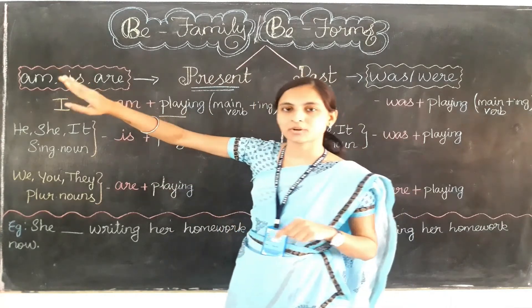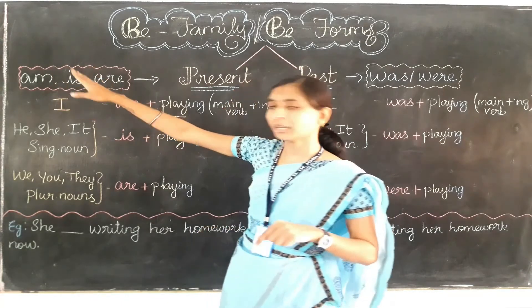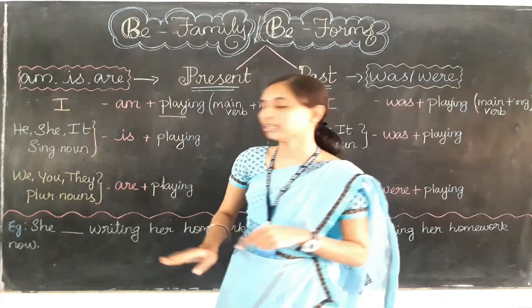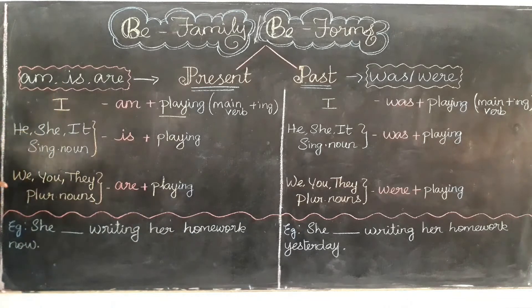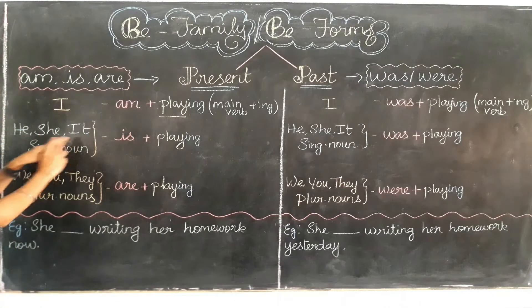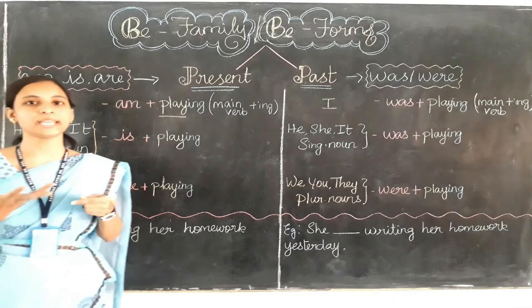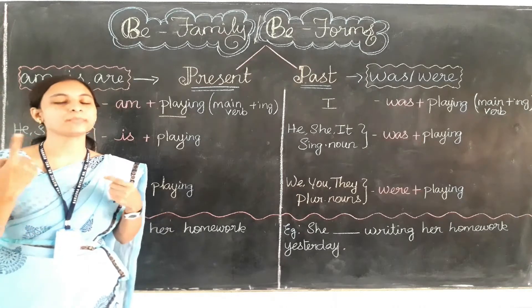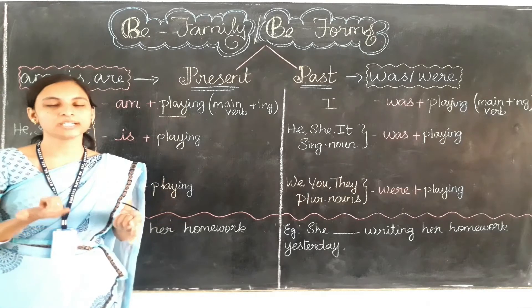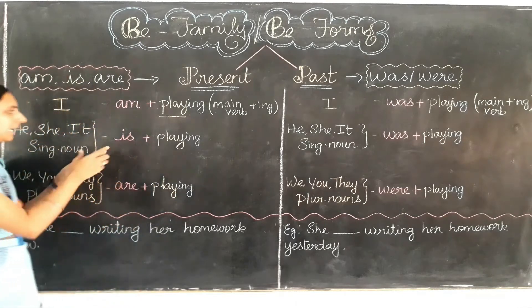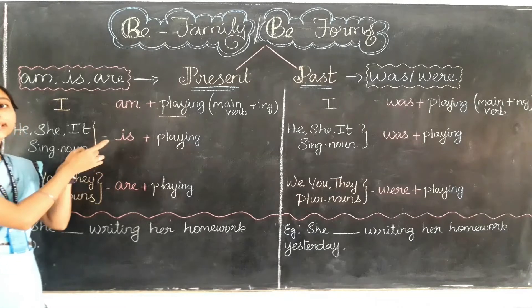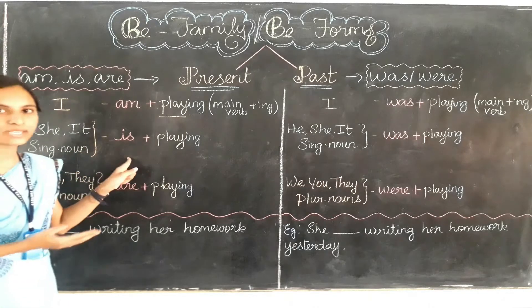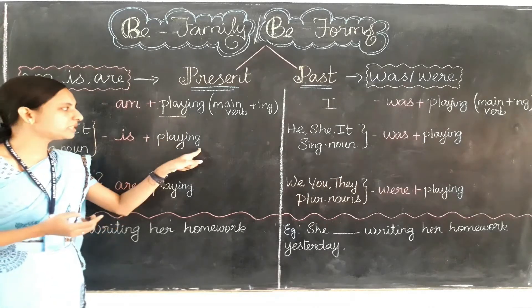Now let's learn about is. Where can we use the B form verb is? Is can be used with the subjects he, she, it, and also with singular nouns. If you find any subject — he, she, it — or you are talking about only one person in a singular noun, it may be a single person, a single animal, or a single bird, then you need to use is.